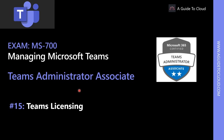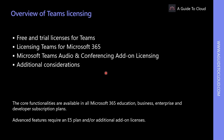Microsoft Teams is available in different licensing models — from a Teams Free license, over the Teams Commercial Cloud Trial offer, up to subscriptions that include Teams plus calling, voice, and add-on licenses. At the user level, access to Teams can be enabled or disabled per user by assigning or removing the Teams product license. The core functionalities are available in all Office 365 education, business, enterprise, and developer subscription plans, while advanced features require an E5 plan and additional add-on licenses.